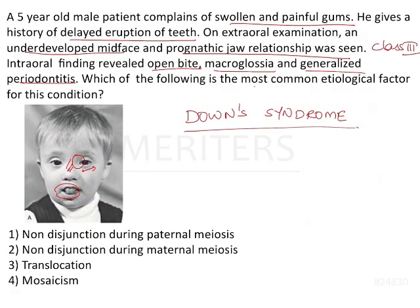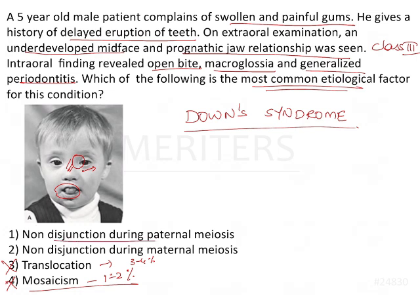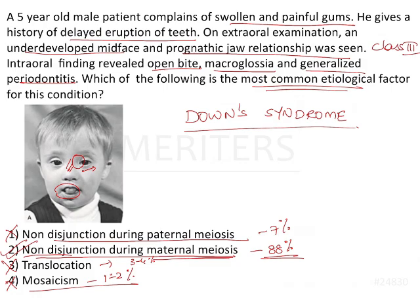Coming back to the question: which is the most common etiological factor? Mosaicism is only 1–2% of all cases, so it's not this. Translocation is only about 3–4% of all cases, so not this. Non-disjunction during paternal meiosis accounts for only 7% of all cases, so not this. Whereas non-disjunction during maternal meiosis accounts for about 88% of all cases — so this is the answer. The most common etiological factor in Down syndrome is non-disjunction during maternal meiosis.